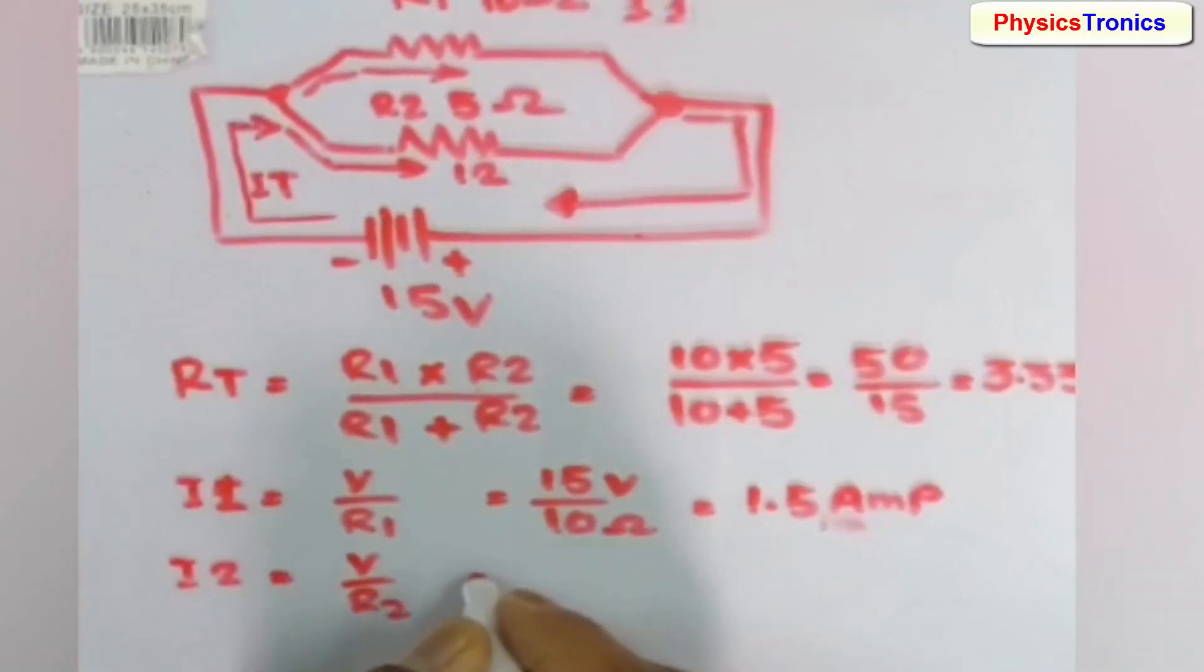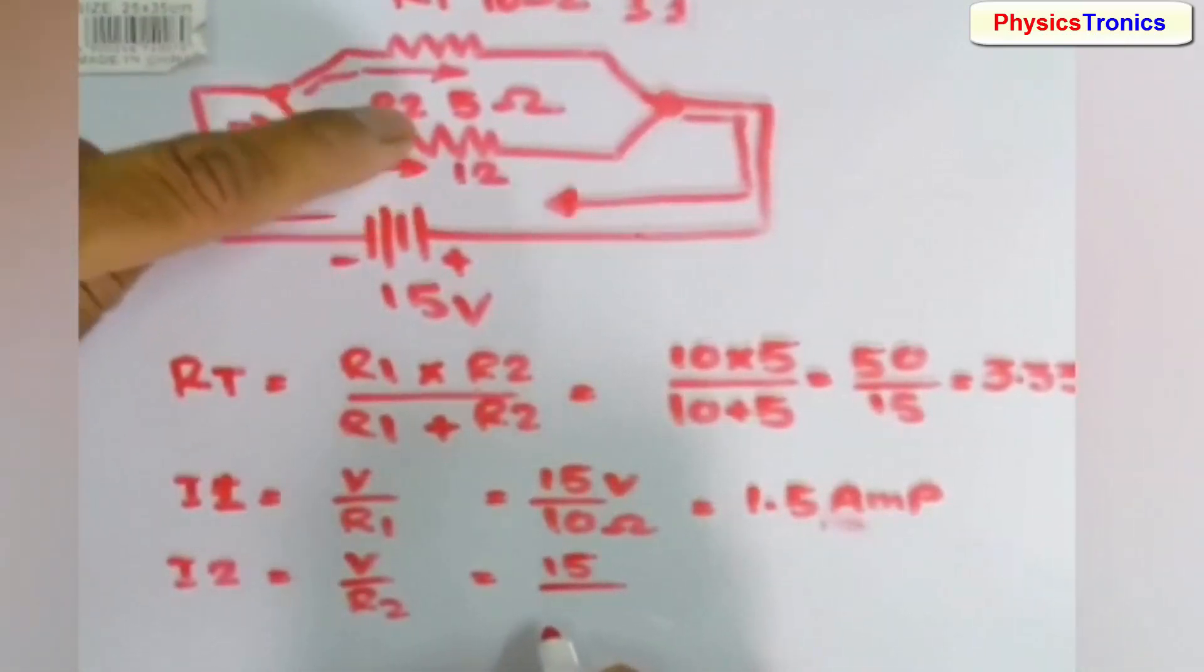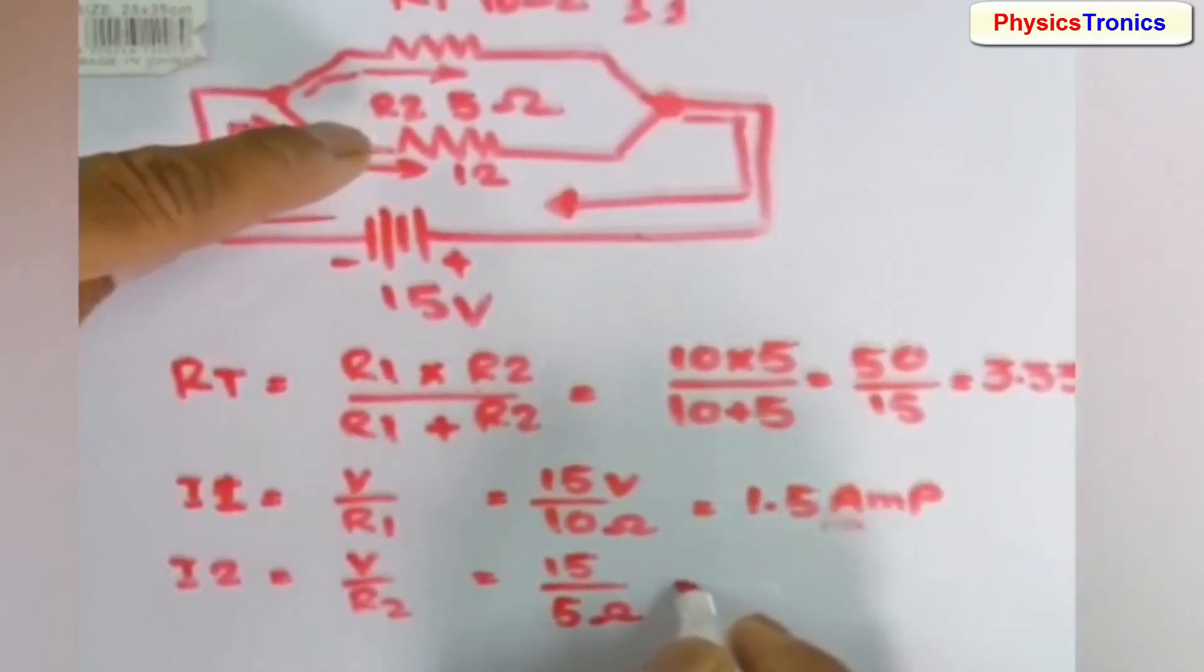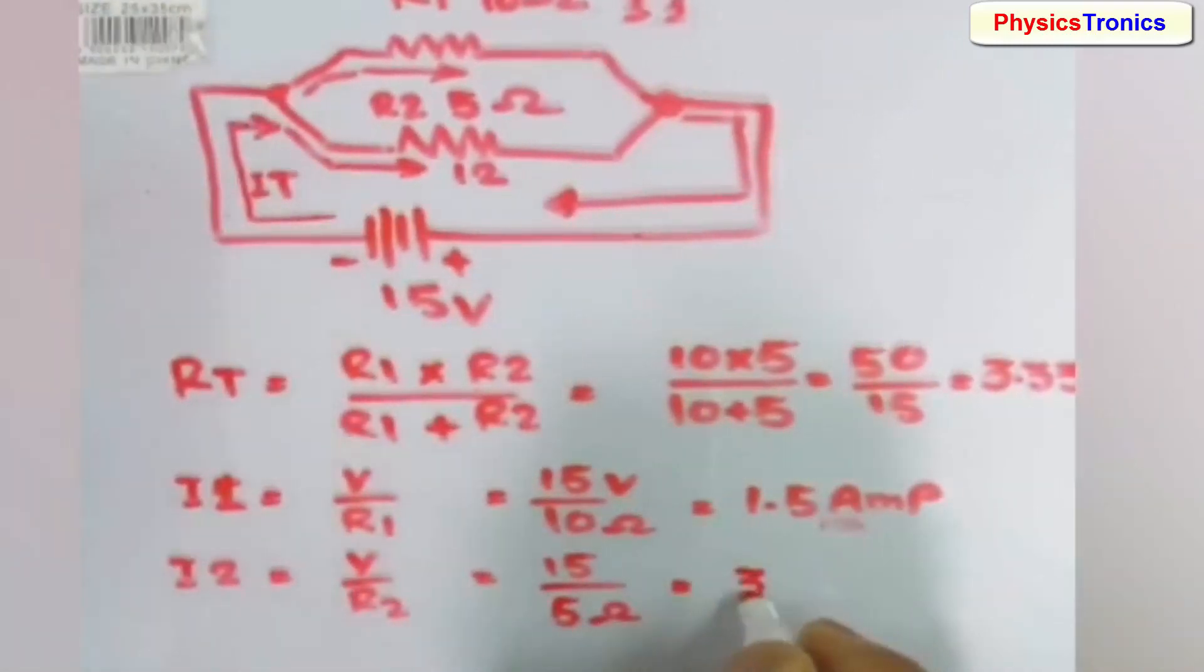In R2, the same formula, but we will put the R2 value which is 5 ohms. It is 3 amperes current.